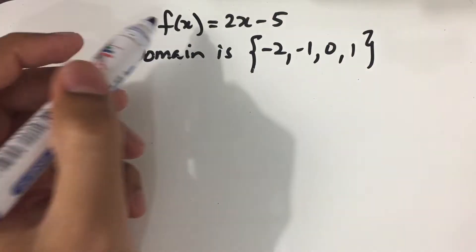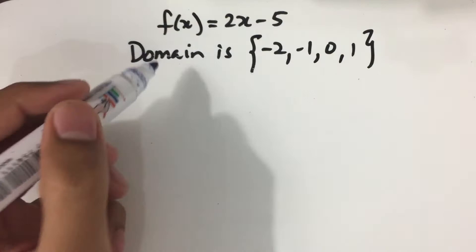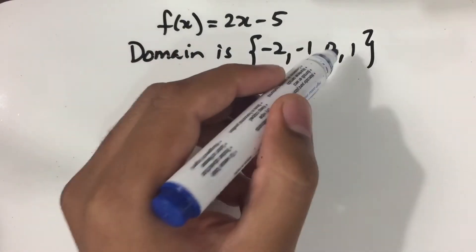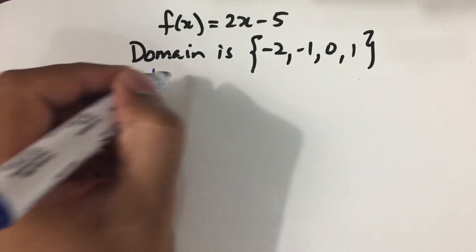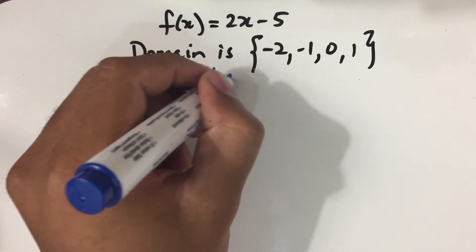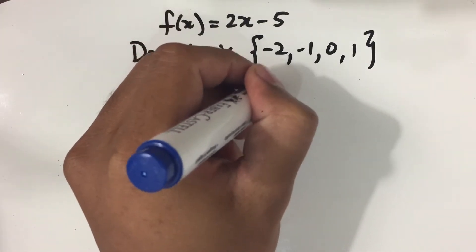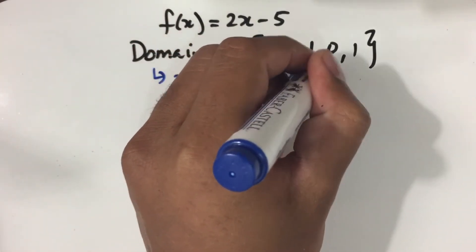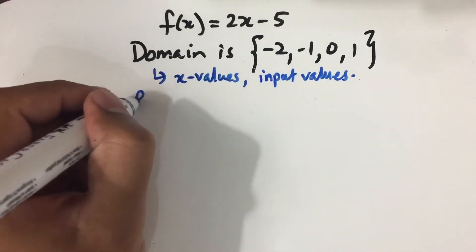We're given a function f(x) = 2x - 5, and the domain is -2, -1, 0, and 1. The domain is just the x values of the function, or we call it the input values of the function. We are asked to find the range.